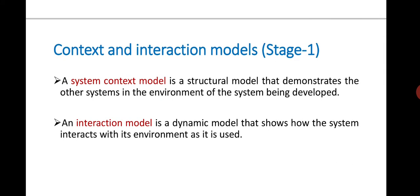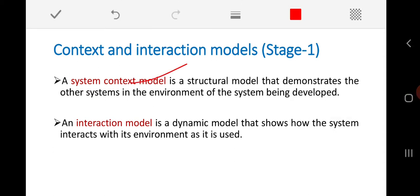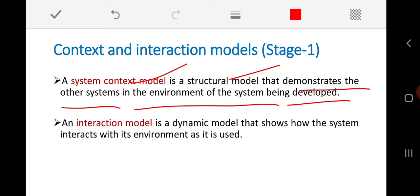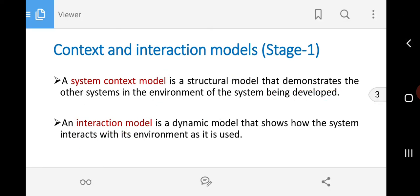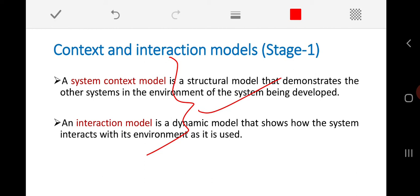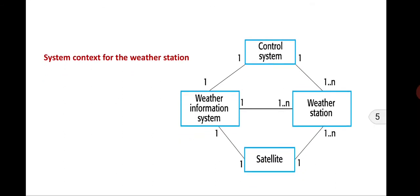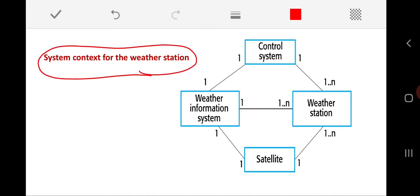In this context and interaction model as the first stage of object-oriented design, we are going to build a system context model — a structural model that demonstrates what other systems exist in the environment of the system being developed. We also represent the system in terms of an interaction model, which is a dynamic model showing how my system interacts with its environment as it is used. As an example, here is the context model we have represented for our weather station.